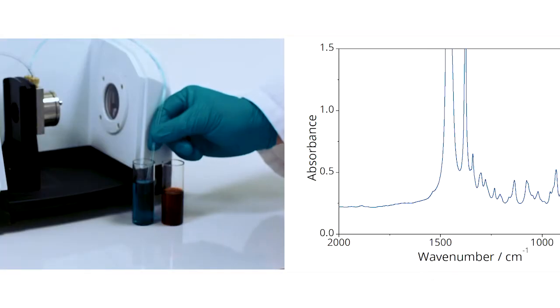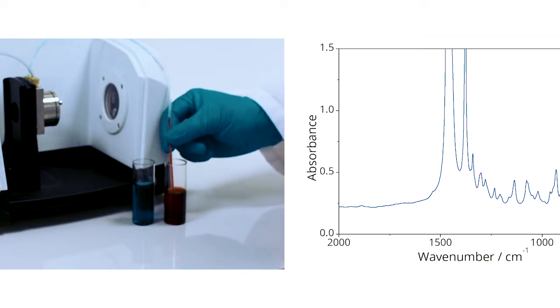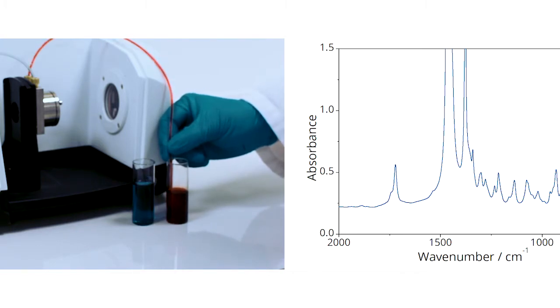In the video on the left, you can see different food dyes flowing through the cell to visually demonstrate a switchover in liquids, whilst the spectra on the right show a solution of heptane switching over to a mixture of heptane spiked with acetone.